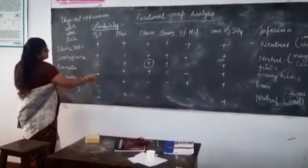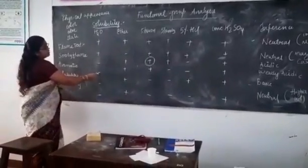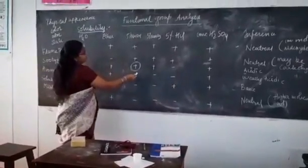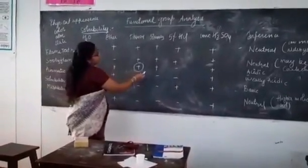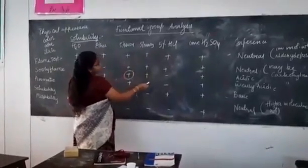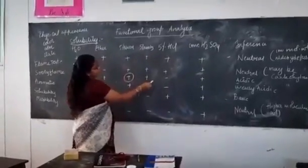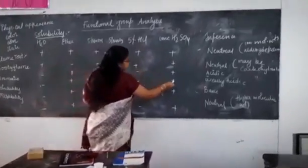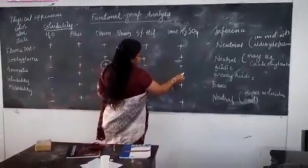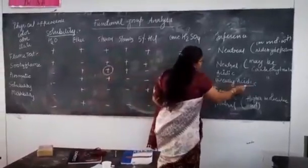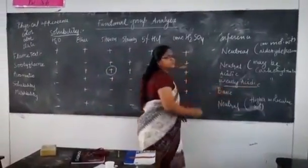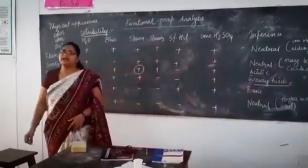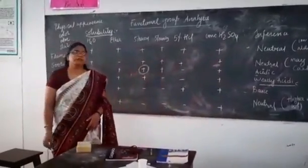If the results show negative for water, positive for ether, positive for sodium hydroxide, but negative for sodium bicarbonate and negative for HCl — it can be a weakly acidic compound like phenol.